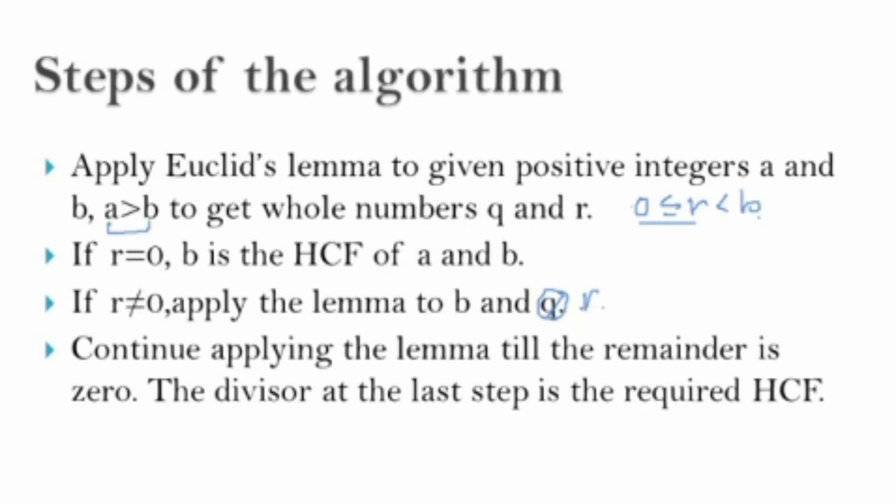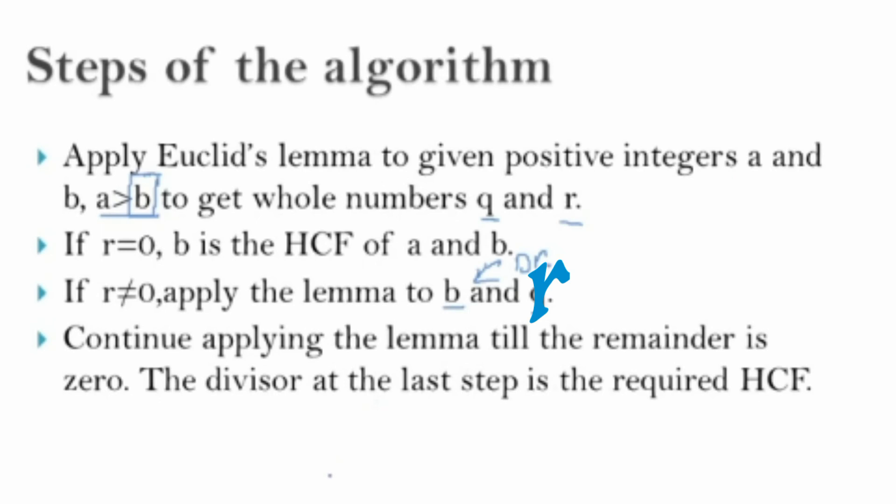When we divide in the next step, if remainder becomes 0, then the r which we divided by, that is the HCF. But if the remainder in the next step is not 0, we have to continue applying the lemma till the remainder is 0. As soon as the remainder becomes 0, that last step's divisor is the required HCF.